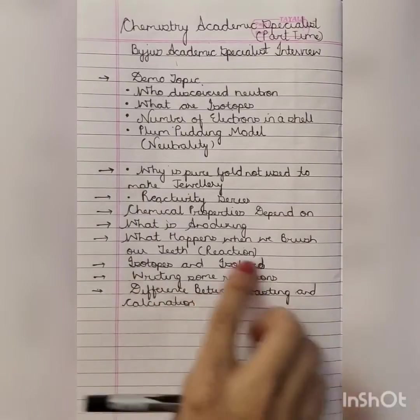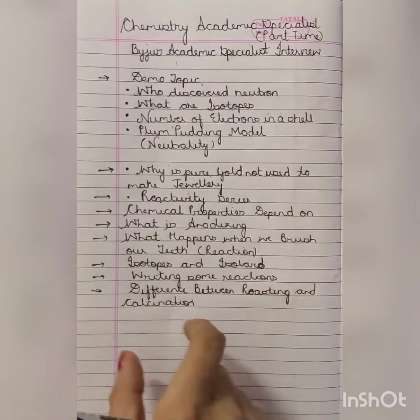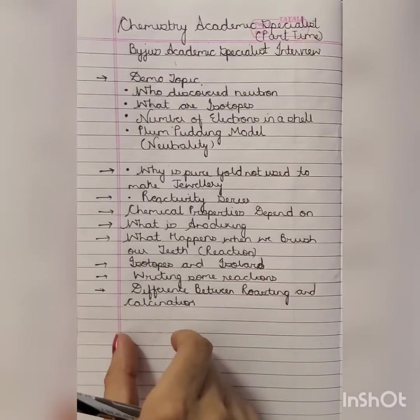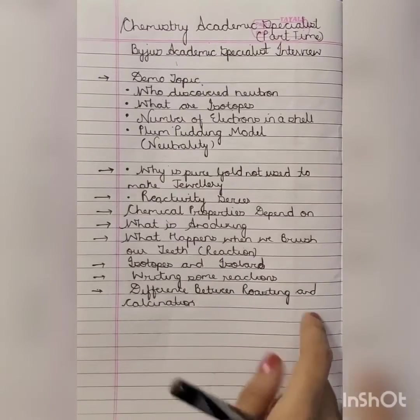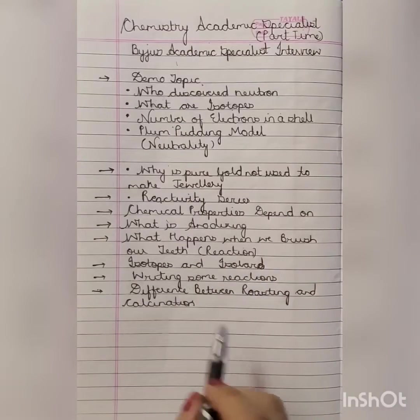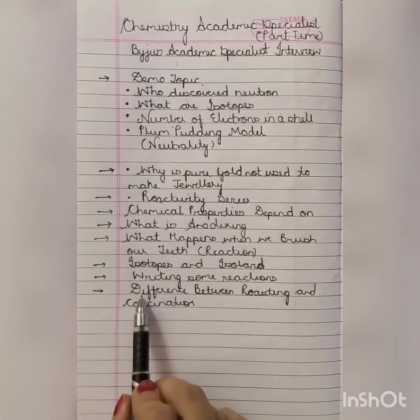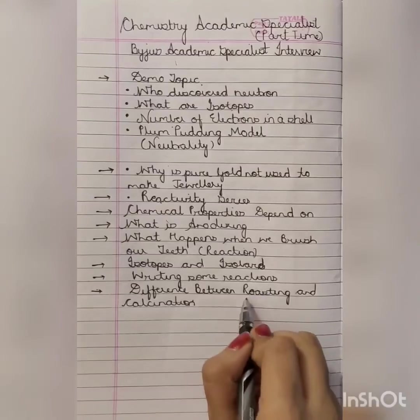Then he gave some reactions and said these are the reactants — what are the products? He gave two reactions like that. Then he asked the difference between roasting and calcination.